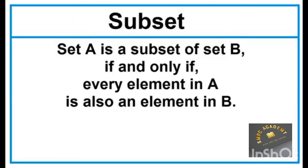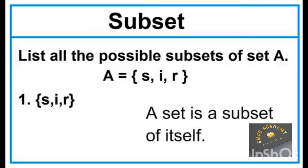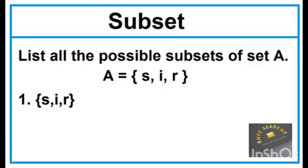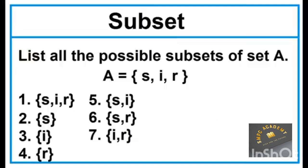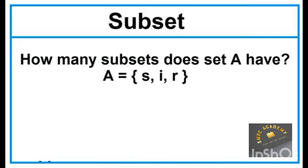Subset: Set A is a subset of Set D if and only if every element in A is also an element in B. Example — list all the possible subsets of Set A, which has 3 elements: 2, 3, 4. Sets with 1 element, sets with 2 elements, and number 8 is an empty set.